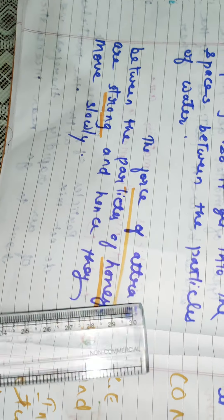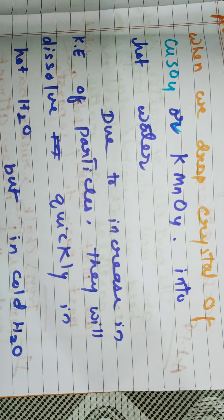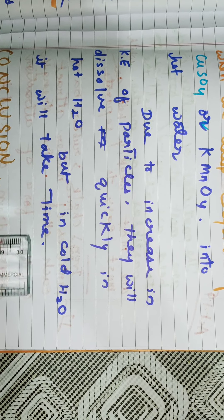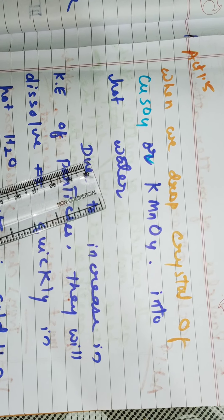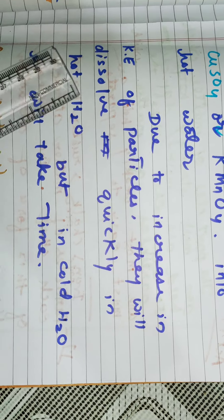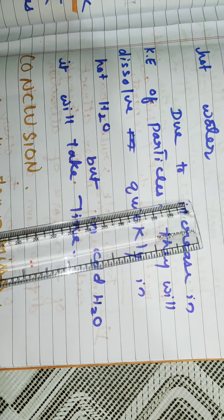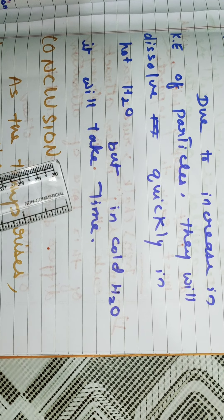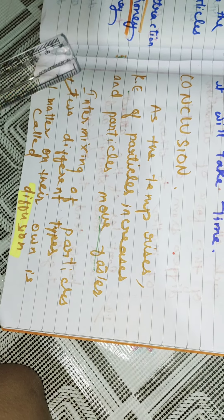In activity 1.5, you have to add crystals of either copper sulfate or potassium permanganate in cold water and in hot water. You will find that when we drop crystal of copper sulfate or potassium permanganate into hot water, due to increase in the kinetic energy of particles, they will dissolve quickly in hot water. But when you add copper sulfate or potassium permanganate in cold water, it will take time. Conclusion is that as the temperature rises, kinetic energy of particles increases and the particles move faster.